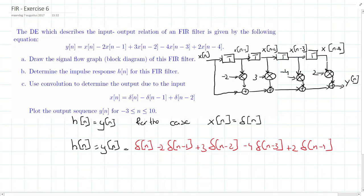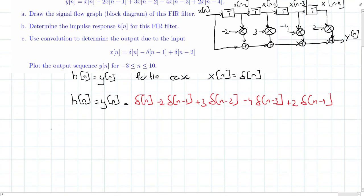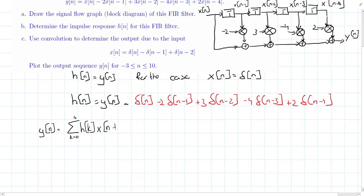For exercise c, use convolution to determine the output due to the input x[n] = δ[n] - δ[n-1] + δ[n-2], and plot the output sequence y[n] from n = -3 to 10. The convolution sum is y[n] = sum from k=0 to 4 of h[k] times x[n-k], since the impulse response has 5 values reaching up to index 4.